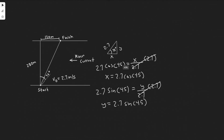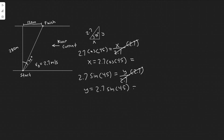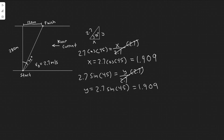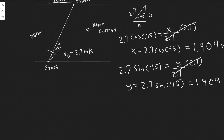Plugging these in: 2.7·cos(45) = 1.909 m/s, and 2.7·sin(45) is the same value — 1.909 m/s — because sin(45) and cos(45) are equal. So we're traveling at 1.909 m/s in both the x and y directions.